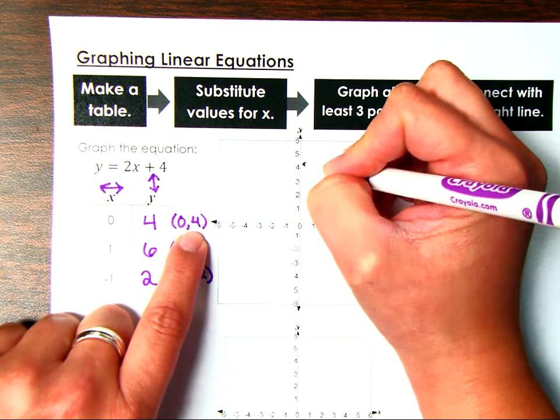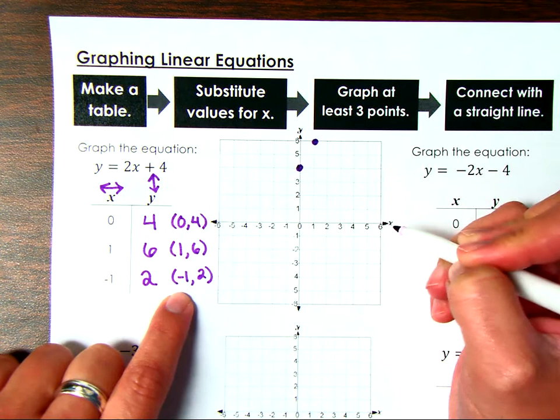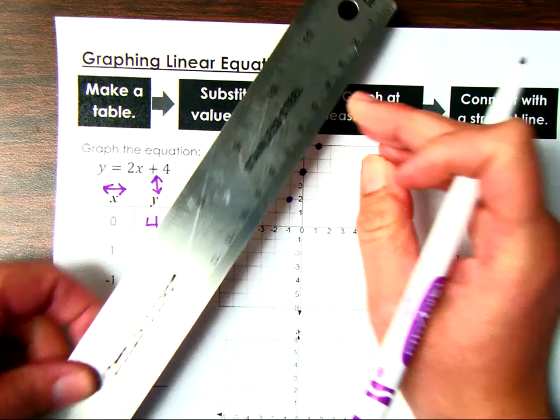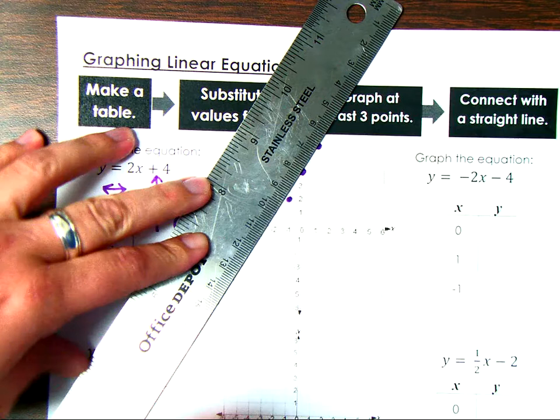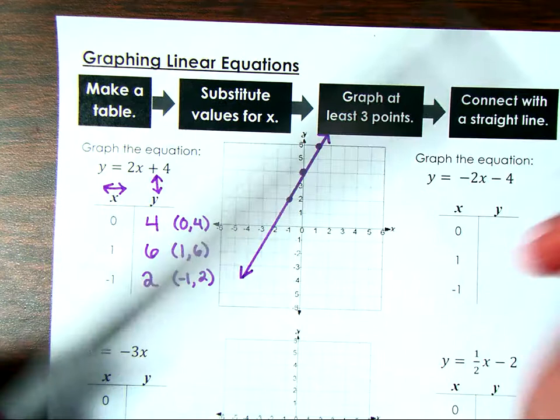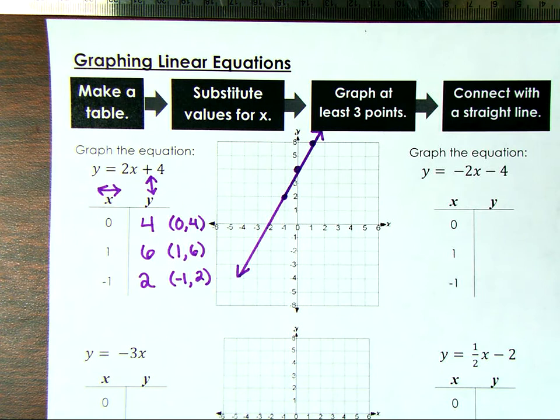When x is 0, I don't have to move left or right, but y is 4, so I go up to positive 4. Then I start back at the origin. When x is 1, y is positive 6 — graph right there. Back at the origin again. When x is negative 1, y is 2. Then use a ruler or the edge of a folder to connect the dots and make it as straight a line as possible. That line represents the linear equation y equals 2x plus 4. Linear looks like the word 'line' — and that's how we graph it.